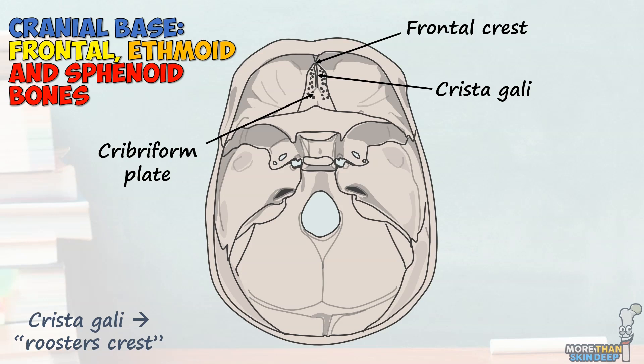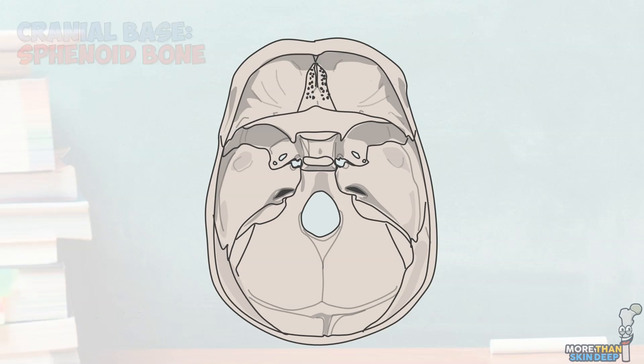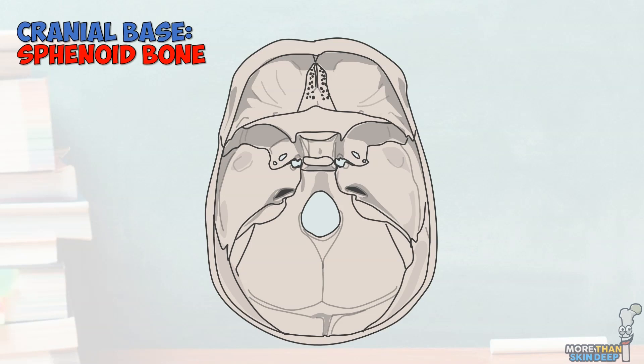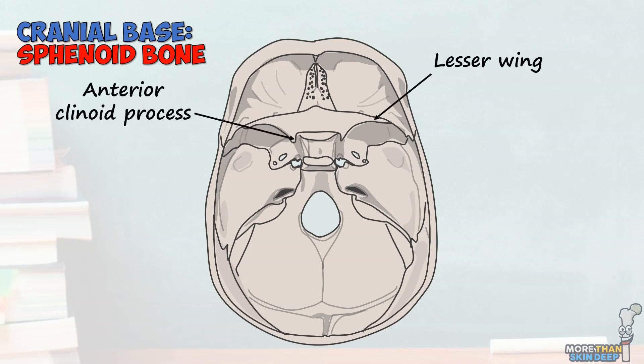The ethmoid bone also has a small number of air sinuses inside it. The sphenoid bone is really complicated and could probably take a whole video dedicated to it. It produces a big chunk of the anterior cranial fossa as well as the next tier down, the middle cranial fossa. The parts of the sphenoid bone in the anterior cranial fossa are the lesser wings, which go all the way out to the lateral skull, and the anterior clinoid processes, which project posteriorly to attach to more connective tissue. This ridge of sphenoid bone is known as the prechiasmatic sulcus and is the midline border between the anterior and middle cranial fossa.